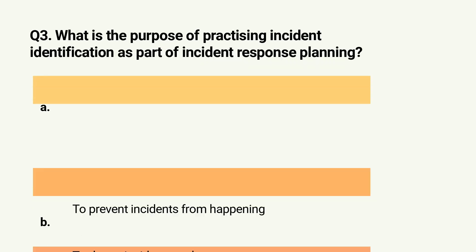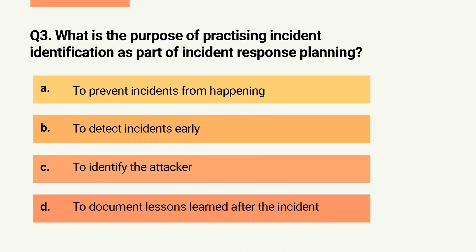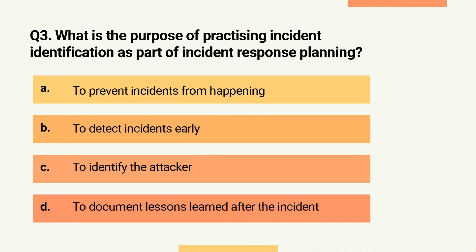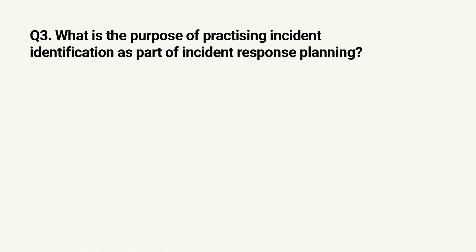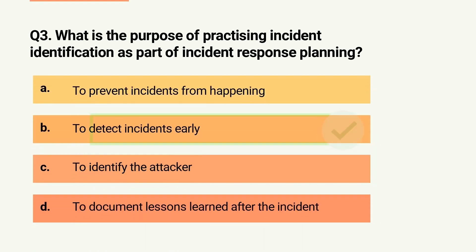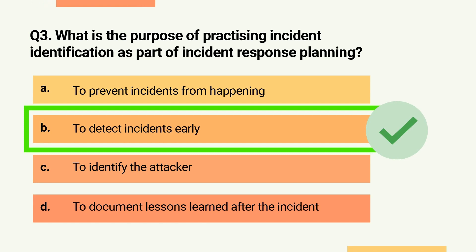Question 3. What is the purpose of practicing incident identification as part of incident response planning? A. To prevent incidents from happening. B. To detect incidents early. C. To identify the attacker. Or D. To document lessons learned after the incident. The correct answer is B: to detect incidents early.